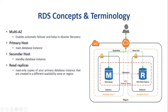Another difference is how data is copied: the secondary host is synchronously synced with the primary with a difference of milliseconds, while with read replica, copies are asynchronous. That means someone reading from a read replica might not have the most current or complete data — and there are ways to identify those kinds of inconsistencies. The secondary host is used for failover and recovery while read replica is used for read scalability.